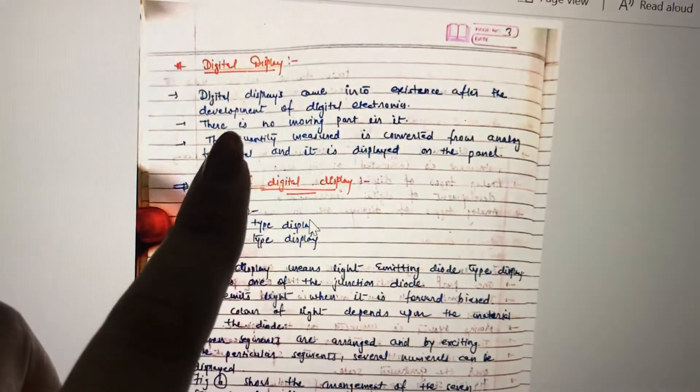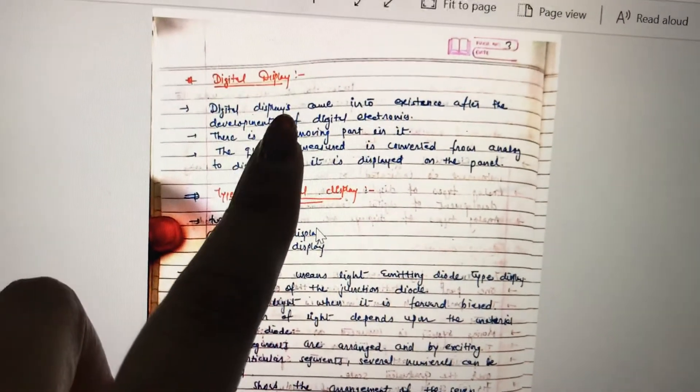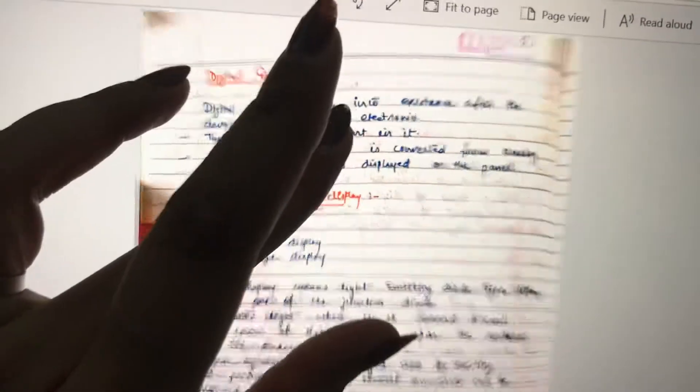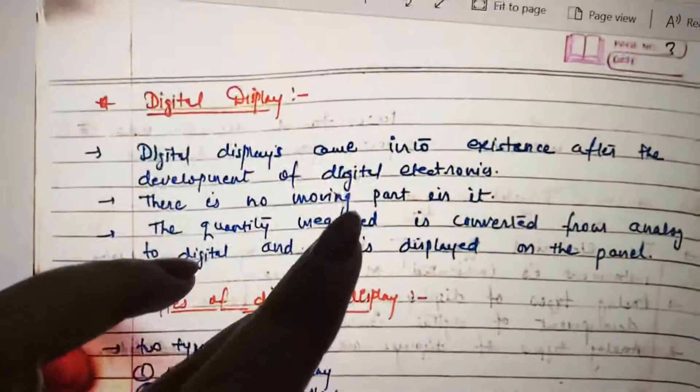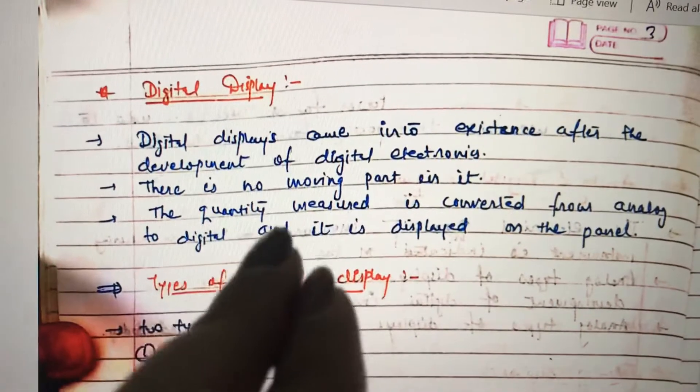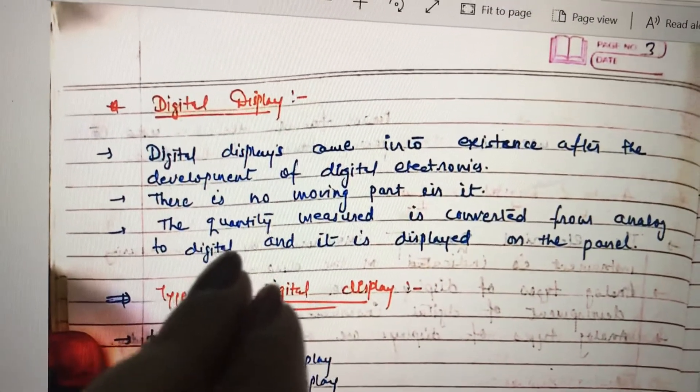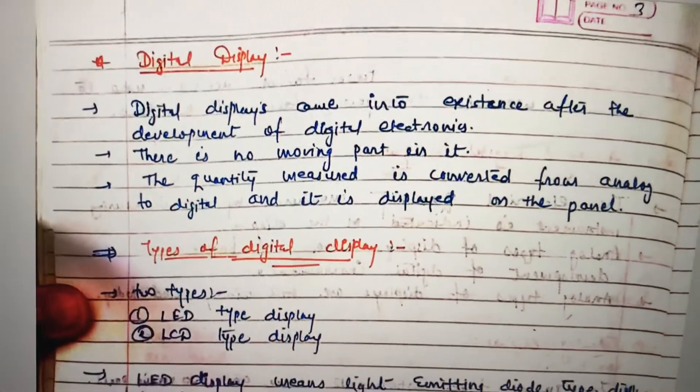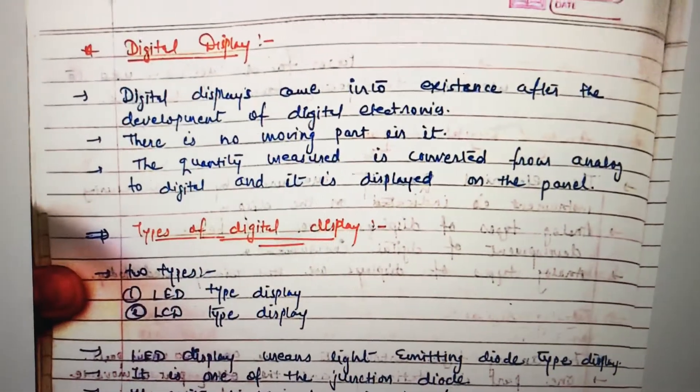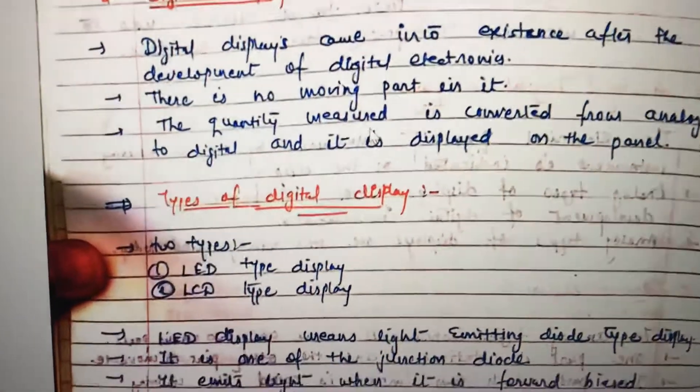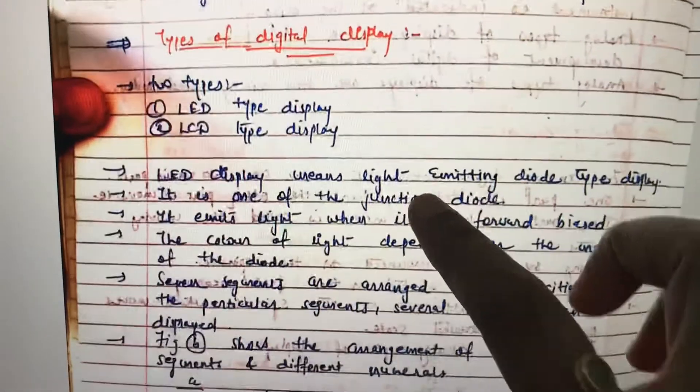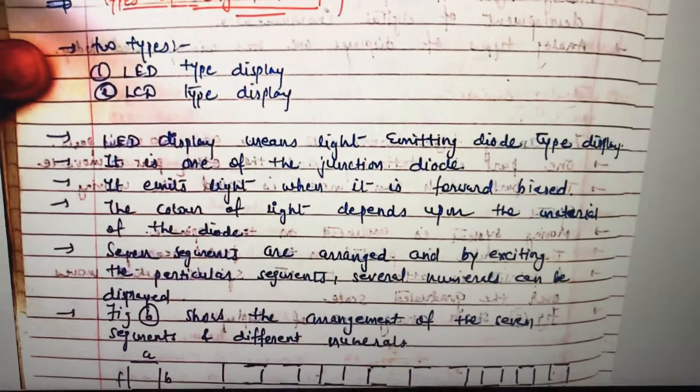Digital display - where it came from, what's its existence? When digital electronics parts started, digital display devices came into market. There is no moving part in digital display devices. The quantity measured is converted from analog to digital and is displayed on the panel.